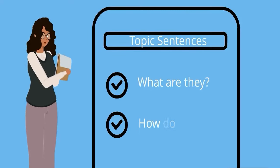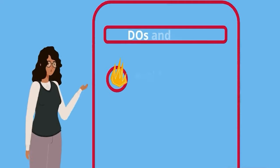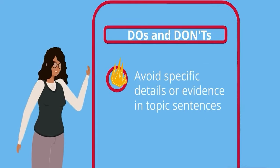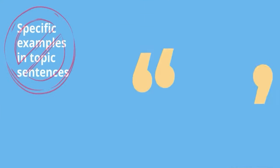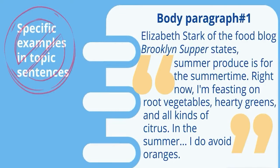Now that we've covered what topic sentences are and how to create them, let's go over some do's and don'ts. The first tip is to avoid specific details or evidence in topic sentences. In this example, the writer starts with a specific example of adaptability, showing how a cook uses ingredients that are available during certain seasons.